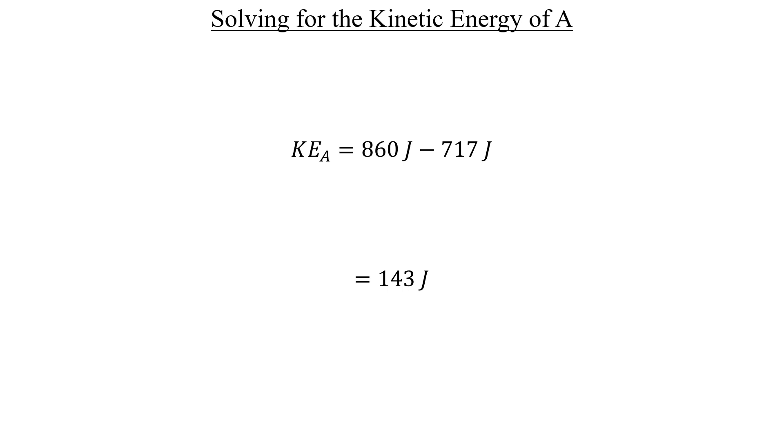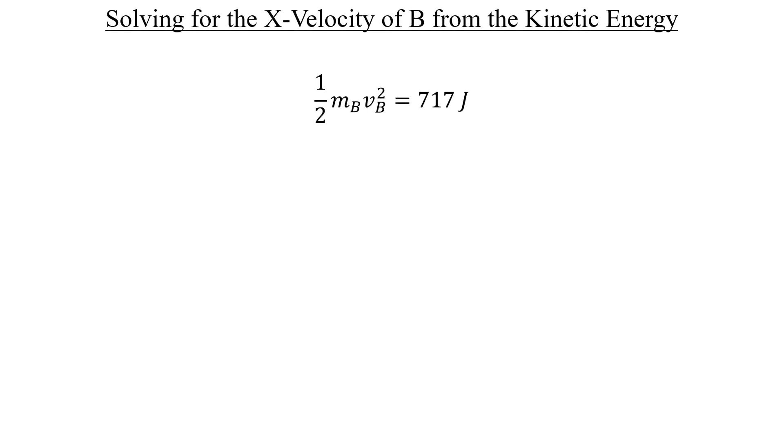We're going to use these energy values to solve for the horizontal velocities of the chunks after the explosion. I'll begin with B. To isolate the velocity, we're going to multiply both sides by 2 and divide both sides by B's mass. And then we'll take the square root of both sides. When you plug in the numbers and stick this into a calculator, you should get approximately 71.6 meters per second.